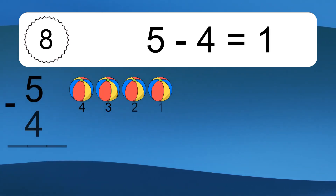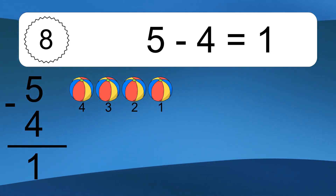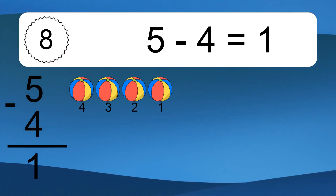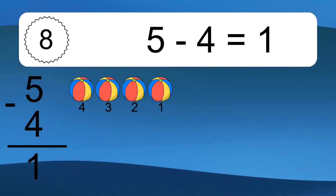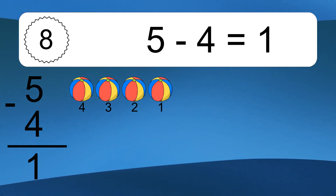5 minus 4 equals 1. Let's count it: 4, 3, 2, 1.